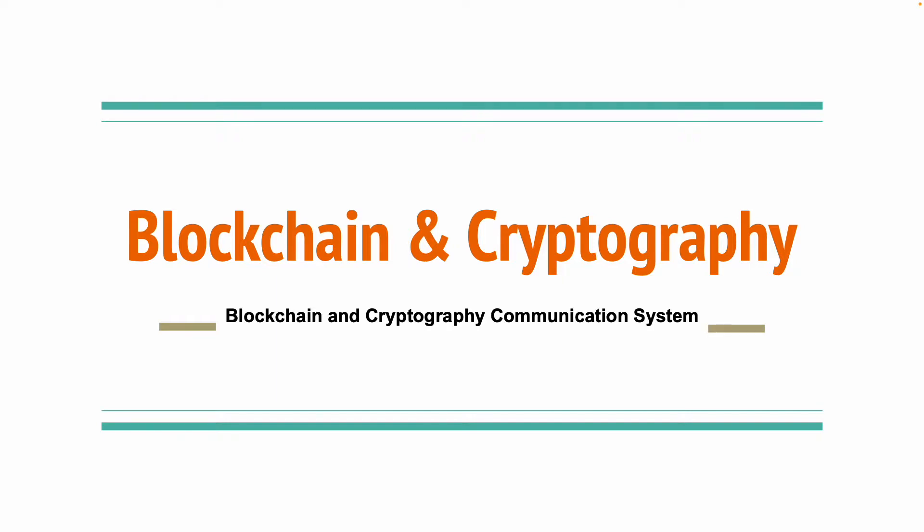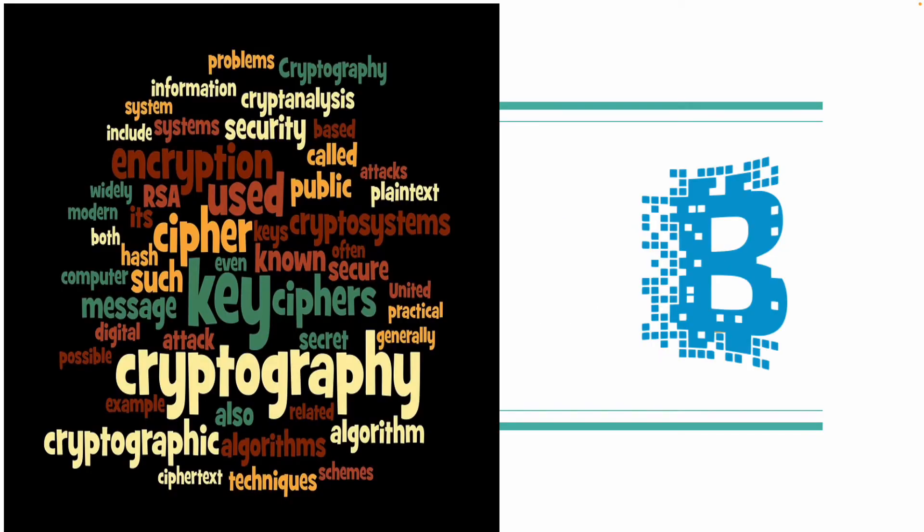Any messaging system like Instagram or WhatsApp is using a cryptographic algorithm for encryption. What we will do is go further — we are going to combine the process of blockchain and cryptography for more security. This process is a new one; we can even write and publish a research paper on this project. We are going to use different cryptographic algorithms and the blockchain process for our system.